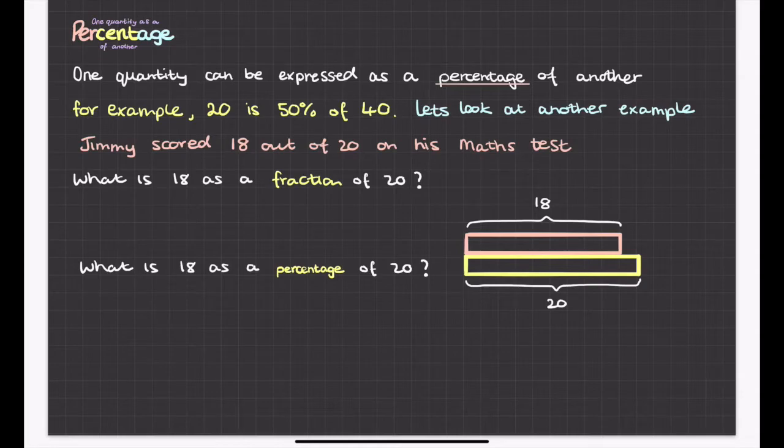So what is 18 as a fraction out of 20? Well, very simply, it's 18 out of 20, 18 twentieths. And we could simplify that fraction. Let's make that 9 tenths. We'll divide top and bottom by that common factor of 2.